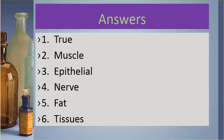Answers. Number one was true. Number two is muscle. Number three is epithelial. Number four is nerve. Number five is fat. Number six is tissues.